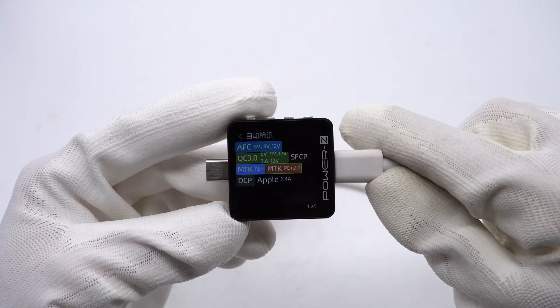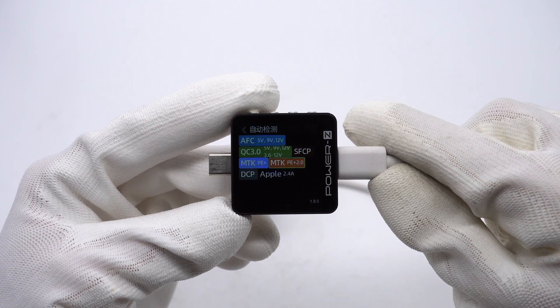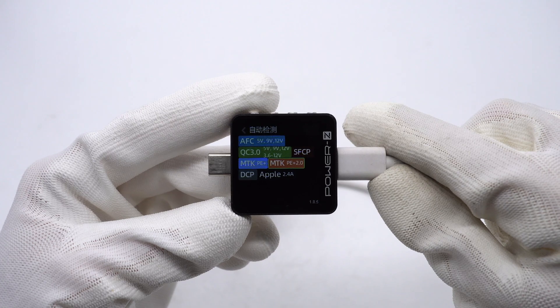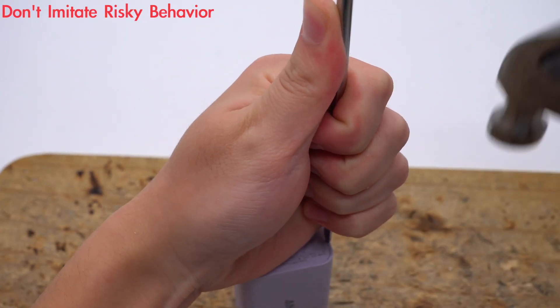The USB-A supports AFC, QC3.0, SFCP, PE2.0, DCP and Apple 2.4A protocols. Now let's start to take it apart. Remove the input cover with a spudger and a hammer.